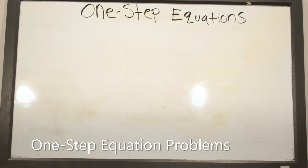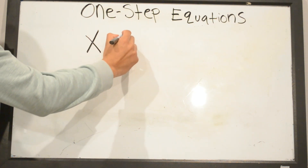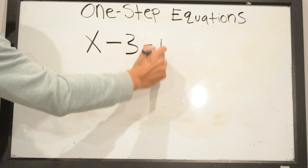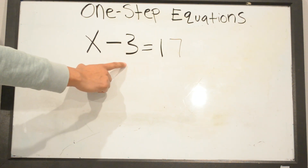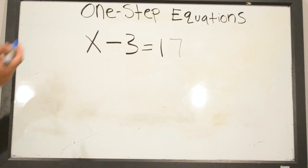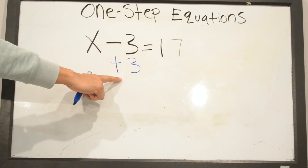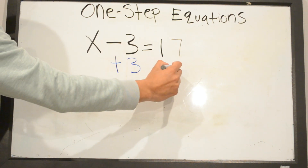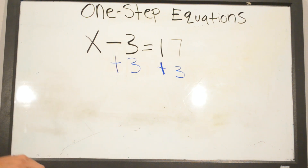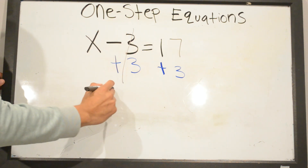Today we are going to be talking about one-step equations. We're going to solve X minus 3 equals 17. To get rid of a number you're always going to do the opposite, so here you have negative 3. The opposite of negative 3 is positive 3. Whatever we do on one side of the equal sign we always have to do on the other side. Negative 3 plus positive 3 gives you X by itself.